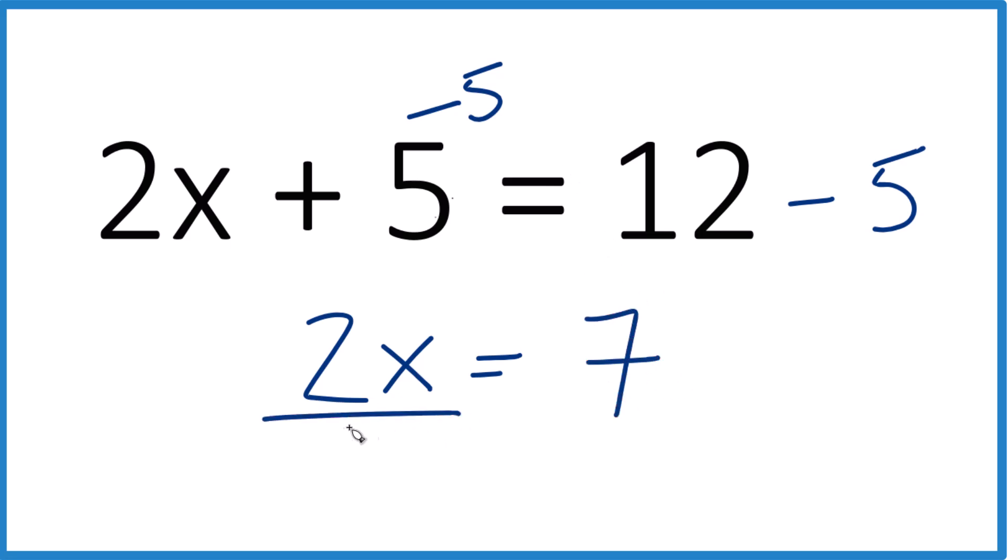Now it looks like if we divide both sides by 2, 2 over 2, that's just 1. So 1x, which we're going to call x, that equals 7 over 2.